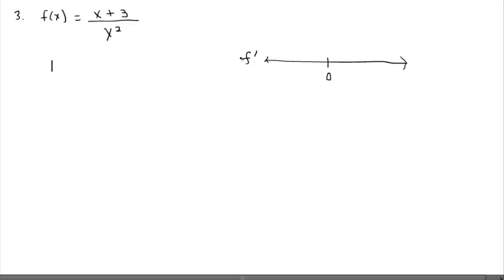I'm going to go ahead and put zero on my f prime number line. Up until this point in examples one and two I only put on critical numbers because the domain for both problems were all real numbers. But we need to identify the domain because if x equals zero doesn't exist on this graph, then there's a vertical asymptote or a point discontinuity.